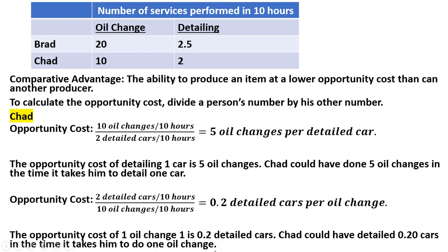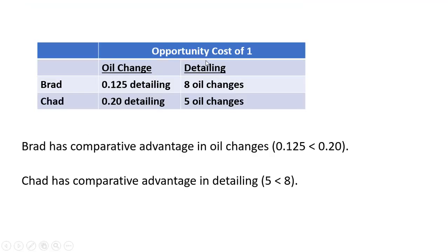Summarizing all this information on a table: the opportunity cost of doing one oil change for Brad is 0.125 detailings; for Chad it is 0.2 detailings. So Brad has a comparative advantage in oil changes — the opportunity cost to do an oil change is slightly less for Brad than for Chad. As for detailing, Chad has a comparative advantage: 5 is less than 8. Every time Chad details a car he gives up 5 oil changes, whereas Brad sacrifices more — 8 oil changes. So Chad has a comparative advantage in detailing. That's it — I hope you found this video helpful.